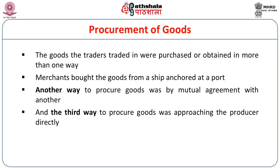Another way to procure goods was by mutual agreement with another: if one person could not buy sufficient goods alone, he could do so with the help of others, and thus a mutual agreement was reached and articles of trade were bought. The third way was to approach the producer directly — even today in India, financiers and big business people contact direct producers to collect all the produce goods.